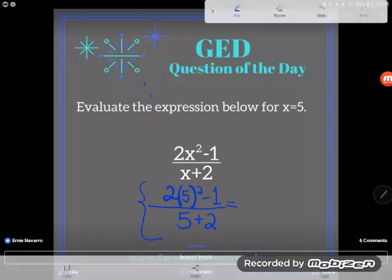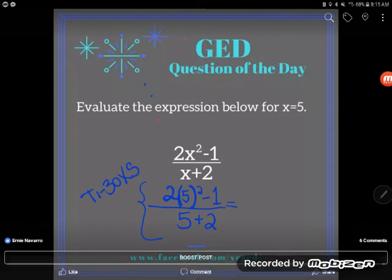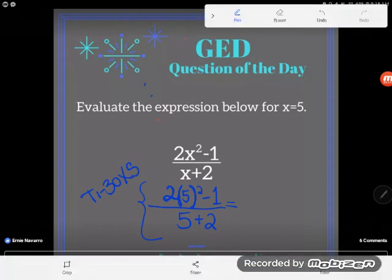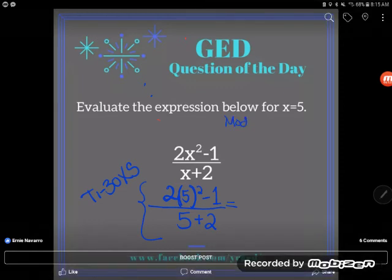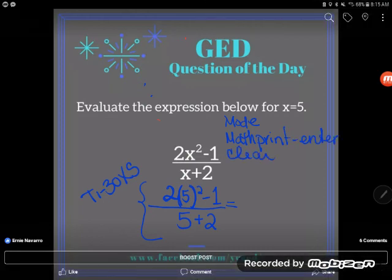Because if this problem came up on the GED, guess what? You would have a calculator. And your TI-30 XS, that's the GED calculator, can handle this entire expression exactly the way it looks. It's going to be super important that you're in the right mode though. So make sure you hit mode, okay, arrow around until you're over the word mathprint, and press enter to select mathprint. And now clear to get out of that mode screen.